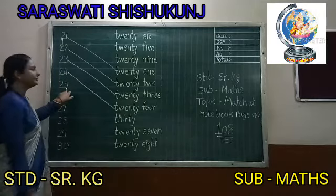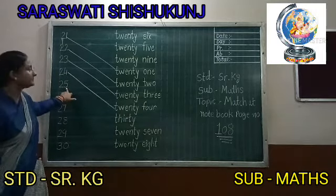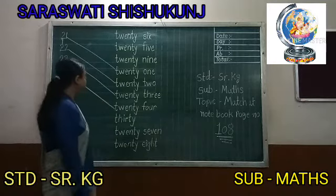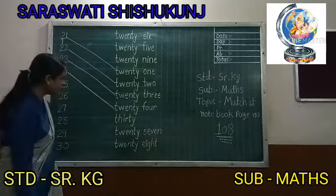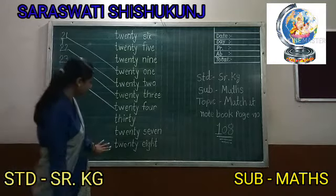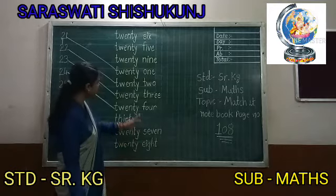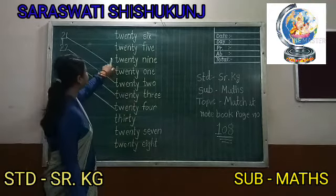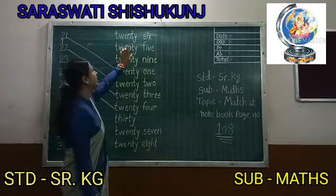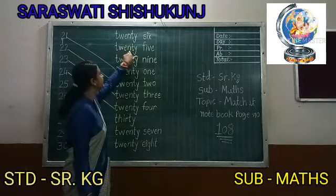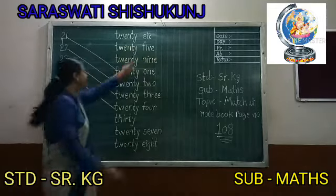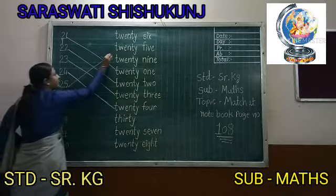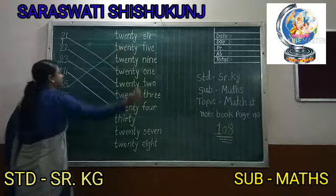Now 25. T, W, E, N, T, Y — Twenty. F, I, V, E — 5. Twenty Five, 25. Where is number 25? Yes, this is 25. So let's match 25.